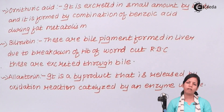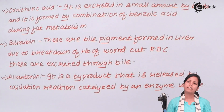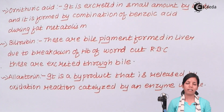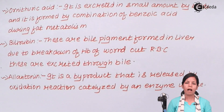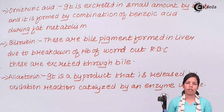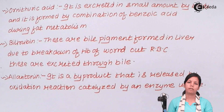So students, in this part of the chapter we studied that there are certain other excretory products also present in different organisms — whether it is aves, birds, or mammals — apart from urea, uric acid, ammonia, etc. I hope students you are all very clear with this concept. Thank you.